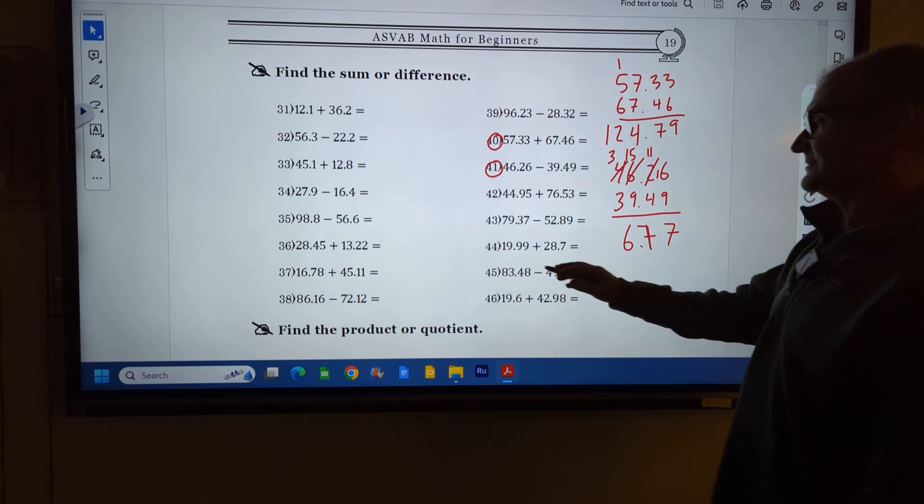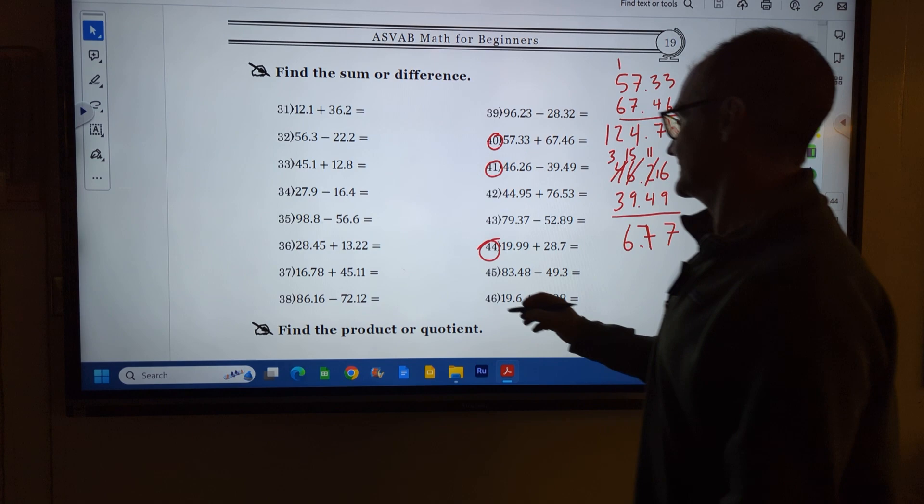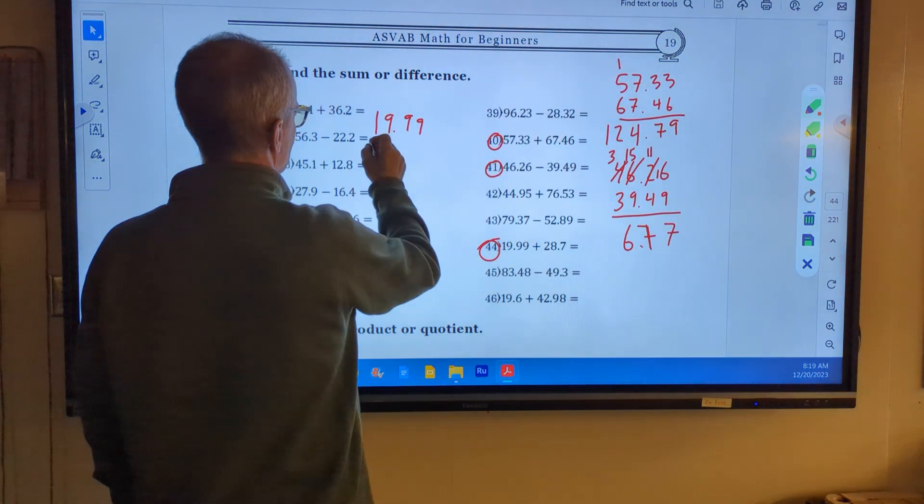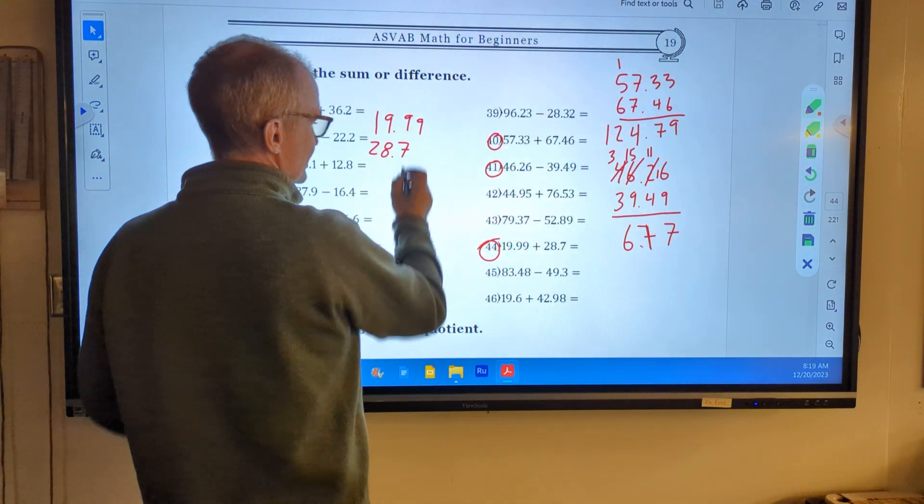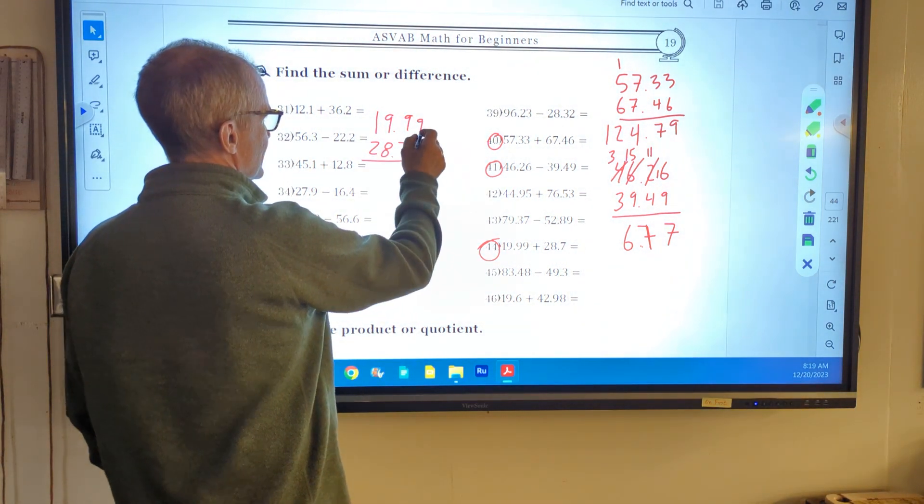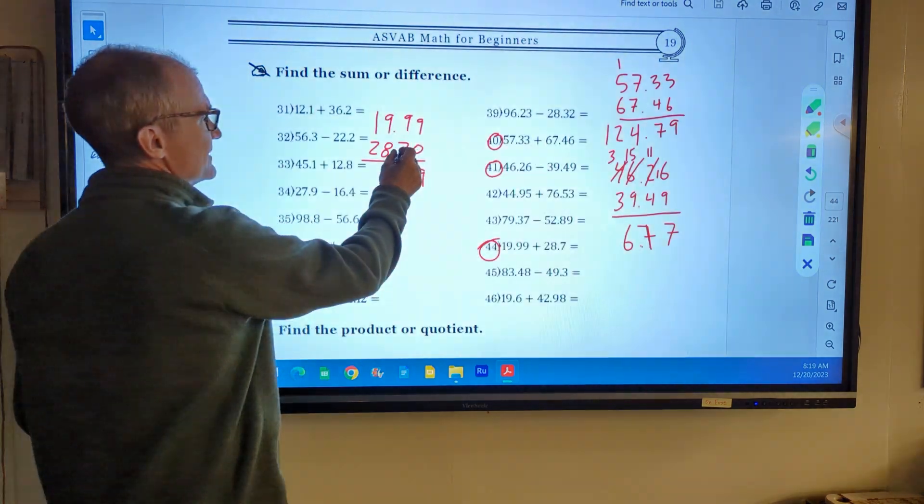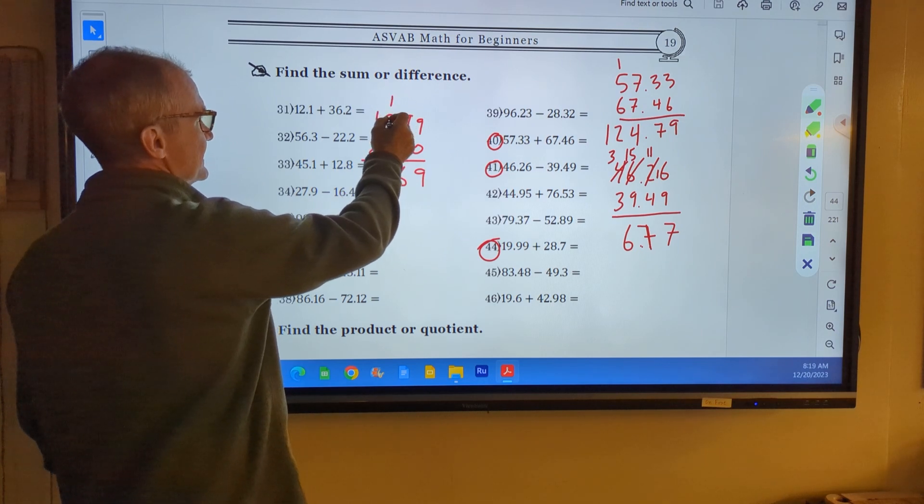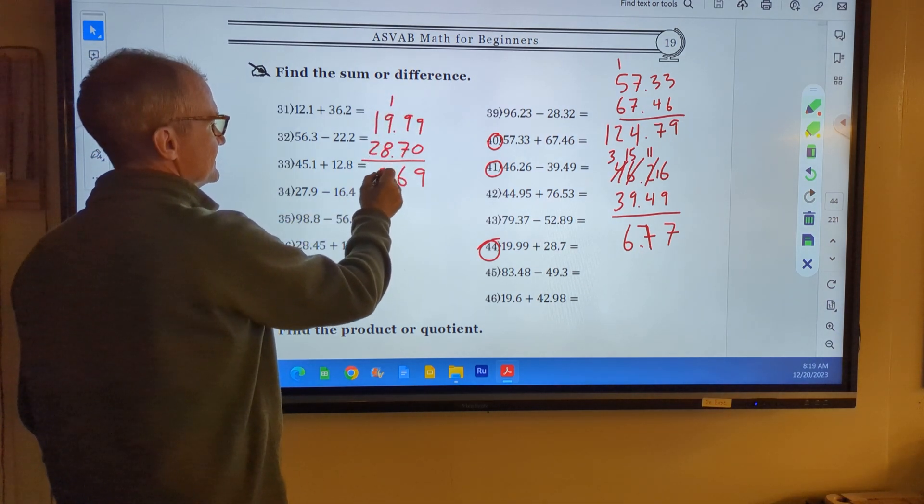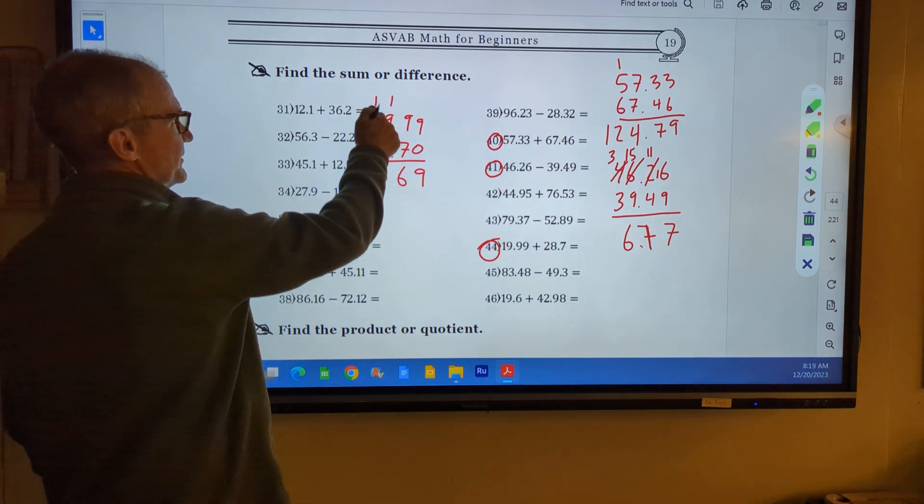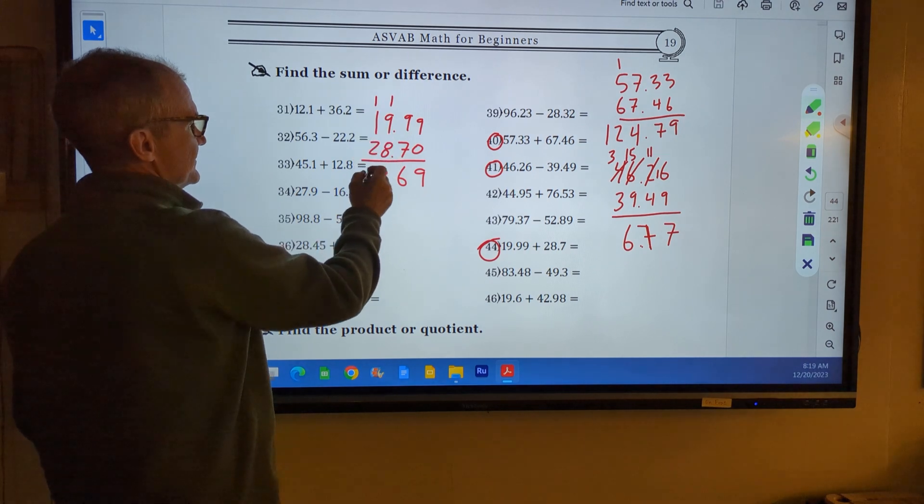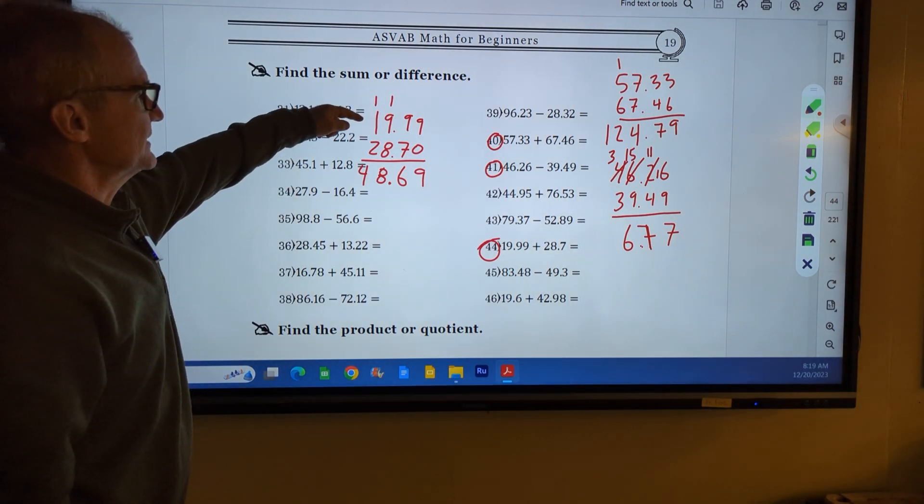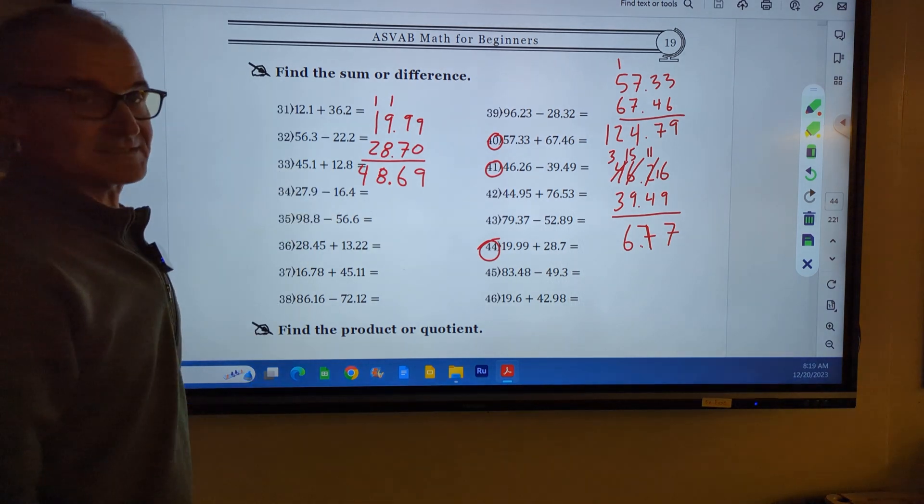Number 44: 19.99 and 28.7. No value after that 7, so I'm going to put a 0 there. 9 and 0 is 9. 9 and 7 is 16. I've got to carry that 1 up here. 1 and 9 is 10, 10 and 8 is 18. I've got to carry that 1 from the 18. 1 plus 1 is 2, plus 2 is 4. My decimal place lines right up there. See if that makes sense. It's pretty close to 20 plus 30, something near 50.